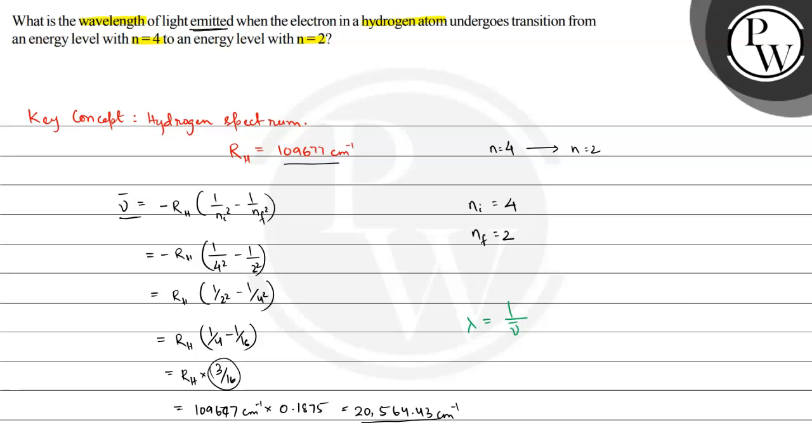We know wavelength equals 1 by wave number. Wave number and wavelength are reciprocals of each other. If we know the wave number value, we can get the wavelength: 1 divided by 20,564.43 centimeter inverse, which equals 4.8627 multiplied by 10 raised to the power minus 5 centimeter.